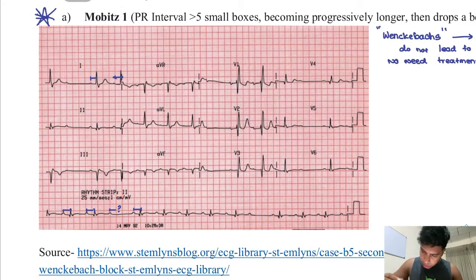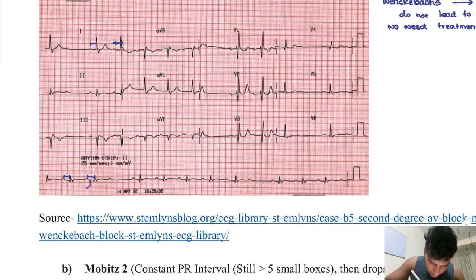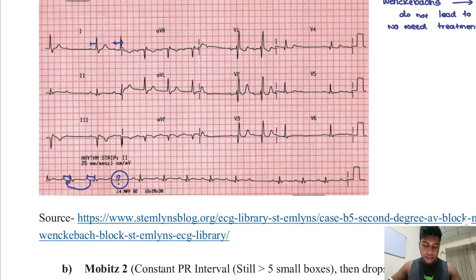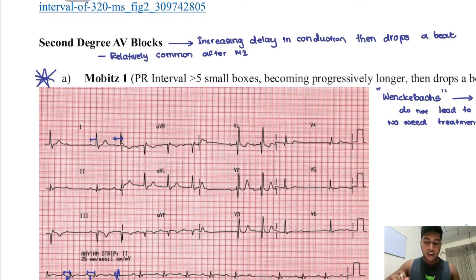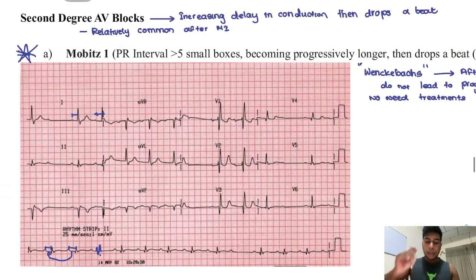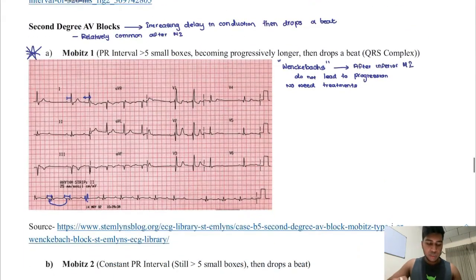Looking at the rhythm strip, you can see the PR interval becoming progressively longer, and then a beat is dropped — there's a P wave but no QRS complex. This is second degree AV block Mobitz Type 1, also known as Wenckebach. The PR interval is greater than five boxes and progressively lengthens before dropping a beat. This typically occurs after an inferior MI, does not progress, and usually does not require treatment.